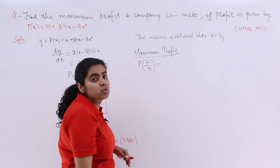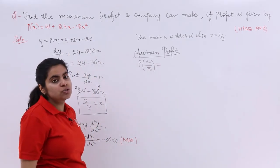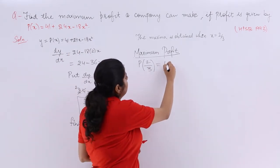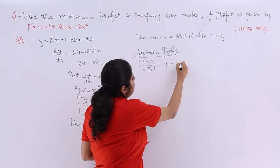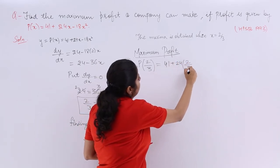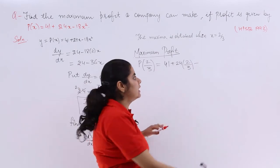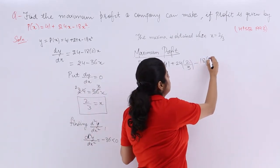It was there, definitely this time it will be P(2/3). So that means in the profit equation you will be putting 2/3. So it is 41 + 24 × (2/3) - 18 × (2/3)², so -18 × 4/9.